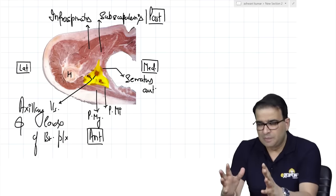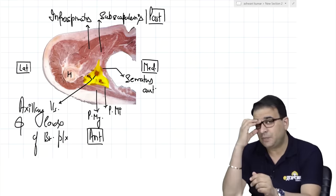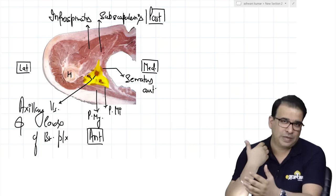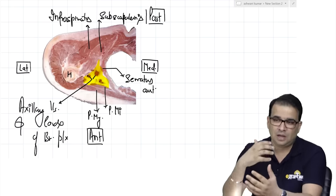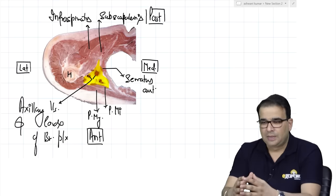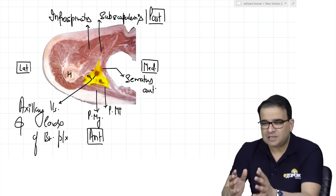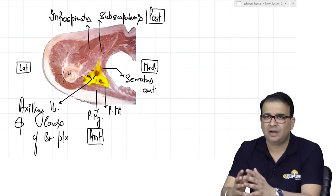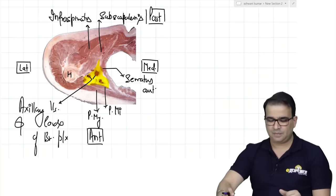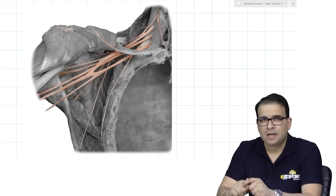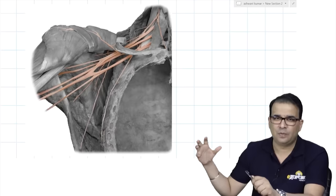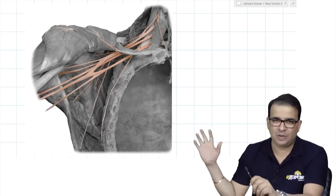Now moving to the major contents of the axilla — the brachial plexus. Let's do it in two parts: first identify the roots and what muscles give passage to the brachial plexus, how the trunks are formed — a recent AIIMS question — and then look at the cords and major branches. This is a cadaveric image in which the brachial plexus is highlighted and the rest left as is, so we can clearly appreciate the nerves.